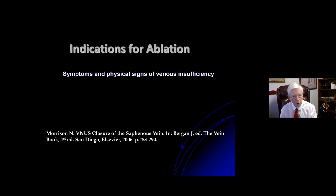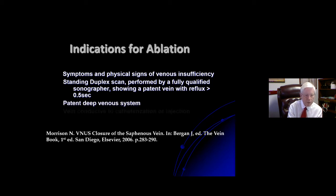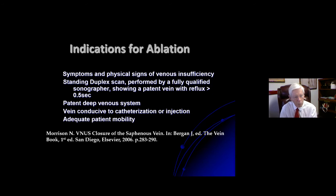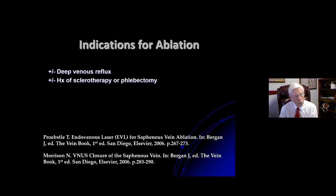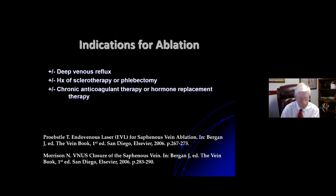Indications for ablation include signs and symptoms of venous insufficiency, a standing duplex scan showing a patent vein with reflux in excess of 0.5 seconds, patent deep venous system, a vein conducive to catheterization or injection, and adequate patient mobility to get patients up and moving immediately following the procedure to reduce DVT risk. Deep venous reflux, history of sclerotherapy, or phlebectomy in the past are not contraindications. Patients on anticoagulation or hormonal replacement are treated like everyone else, though monitored more closely for post-op thrombotic episodes.